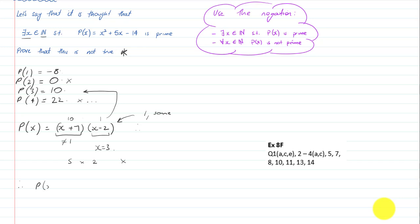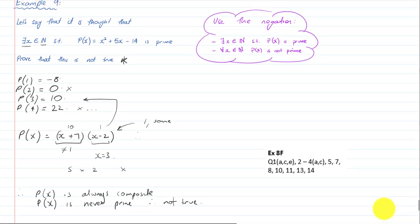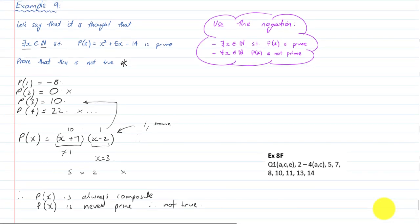P(x) is always composite, and therefore P(x) is never prime. So the 'there exists' statement is not true. Okay, so there are a couple of examples and some ideas on disproving statements. All the best.